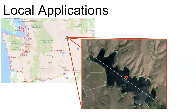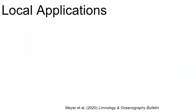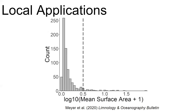Luckily with the GLCP, managers can address both of these questions. First, to compare Buffalo Lake with other lakes in Washington, they can take a page out of Amina Pollard's playbook at the US EPA's National Lake Assessment by isolating all lakes within Washington, creating a distribution of lake area sizes, and then seeing where Buffalo Lake falls in this distribution, here represented by the vertical dotted line. Buffalo Lake is generally representative of larger lakes in the state, and with this information managers can create a list of other lakes that may be more representative of Buffalo Lake based on its area.